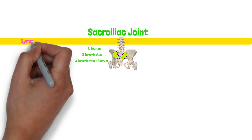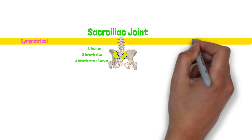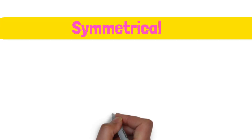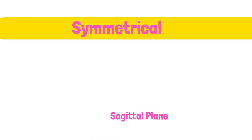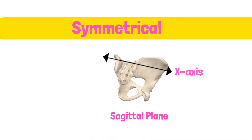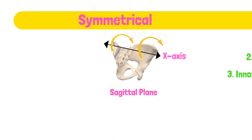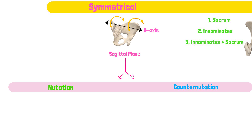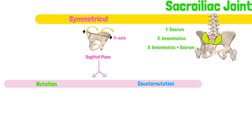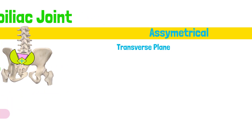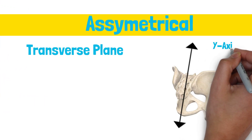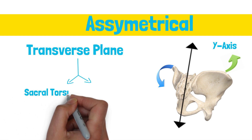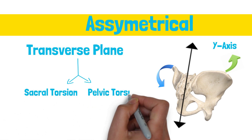Sacroiliac joint movement can be classified as symmetrical and asymmetrical movement. Symmetrical movement occurs in the sagittal plane along the x-axis, and movements that occur symmetrically are referred to as nutation and counter-nutation. Asymmetrical movements occur in the transverse plane along the y-axis, and movements that occur asymmetrically are sacral torsions and pelvic torsions.